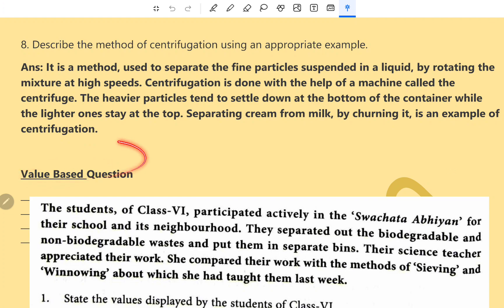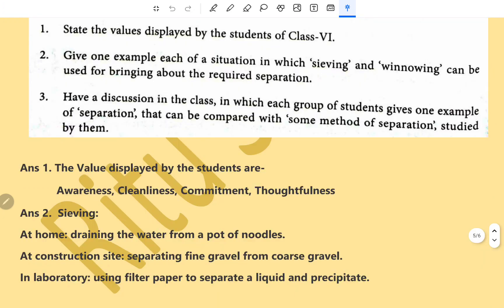Value-based question. The students of class 6 participated actively in Swachata Abhiyan for their school and its neighborhood. They separated out biodegradable and non-biodegradable wastes and put them in separate bins. Their science teacher appreciated their work. She compared their work with the method of sieving and winnowing about which she had taught them last week. The values displayed by the students are awareness, cleanliness, alertness, commitment, thoughtfulness.